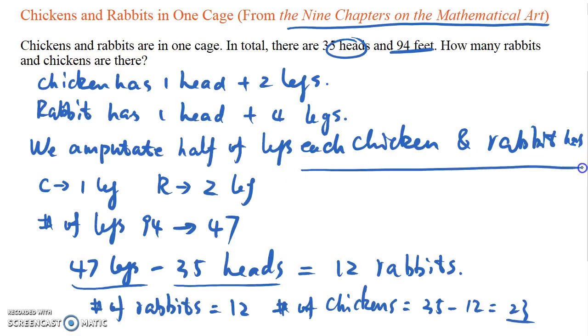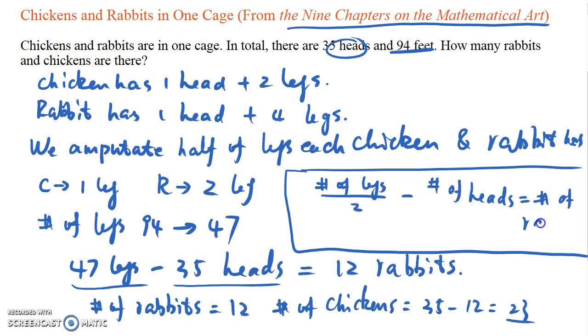The analysis we just did can be summarized as number of legs divided by two, which is the process of the amputation, minus the number of heads, equals the number of rabbits.